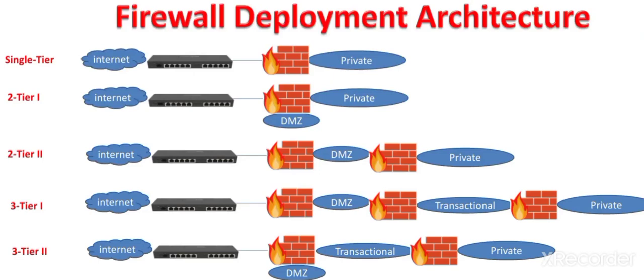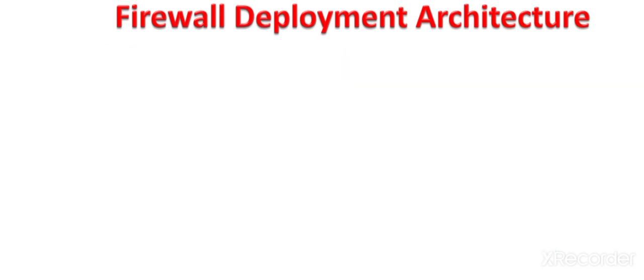A firewall is a network security device which is deployed between networks which have different security requirements. In this video, I will discuss five deployment architectures in which firewalls can be deployed: single-tier architecture, then two-tier architectures — two-tier one and two-tier two — and then three-tier architectures — three-tier one and three-tier two.